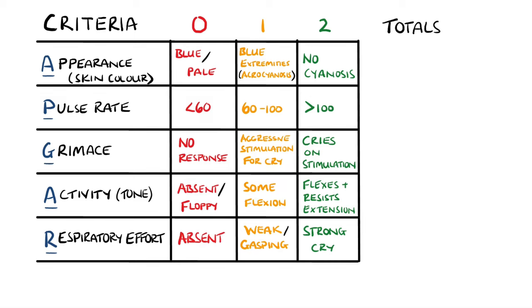A score over seven is generally considered normal. Four to six is low, and below that is critically low.